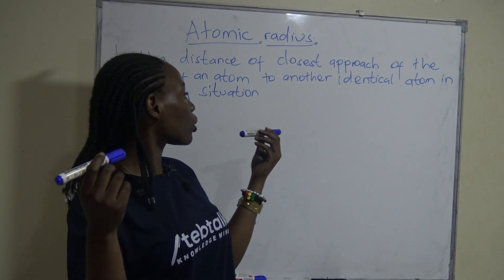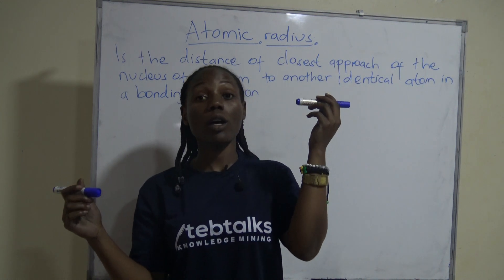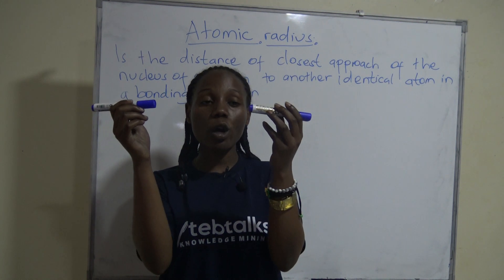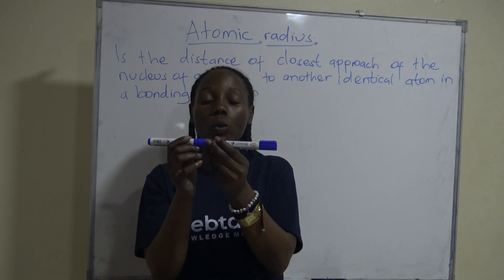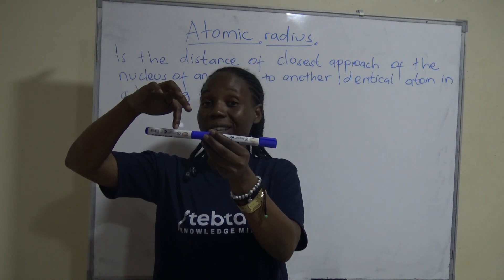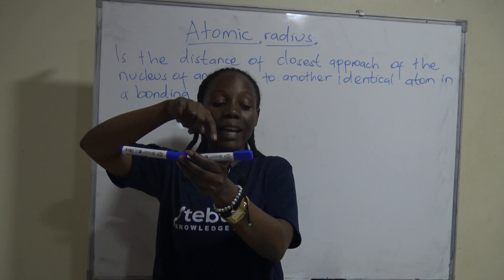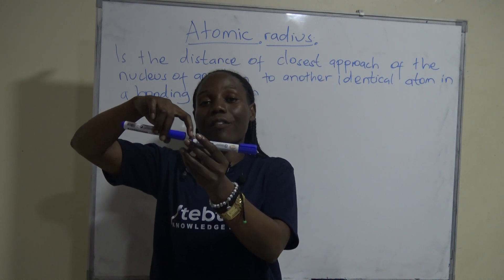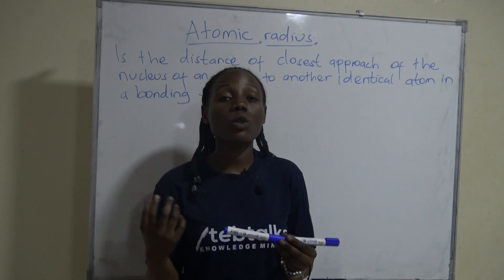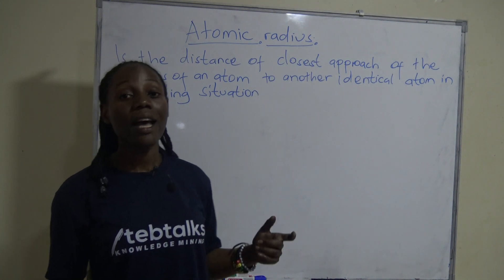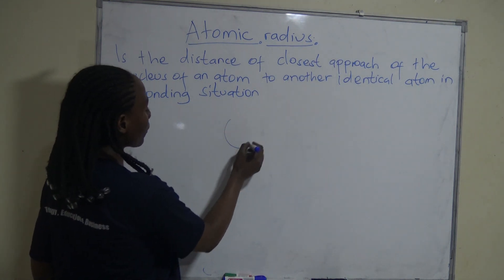We are defining atomic radius as the distance of closest approach of the nucleus of one atom to another identical atom in a bonding situation. Bonding means coming together, so this atom and this atom — the distance of closest approach — they come together. This one has its nucleus at the center, around here, and even this one has its nucleus at the center. From here to the end of the first atom is the radius, and from here to here is also the radius. That is what we are calling the atomic radius.